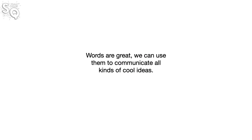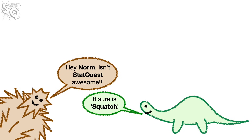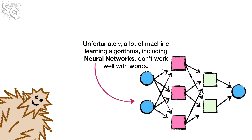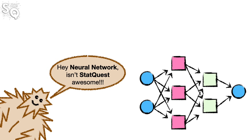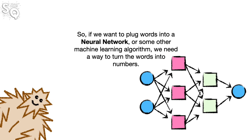Words are great — we can use them to communicate all kinds of cool ideas. Unfortunately, a lot of machine learning algorithms, including neural networks, don't work well with words. So if we want to plug words into a neural network or some other machine learning algorithm, we need a way to turn the words into numbers.